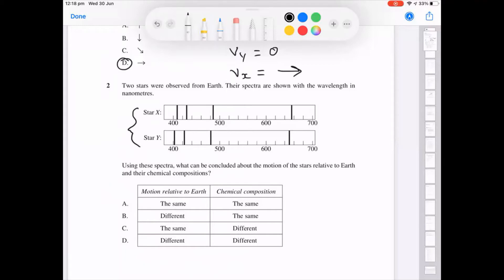Or relative to one another. So we know the motion relative to Earth must be different. So that's meaning that the stars are either moving away or coming towards us.